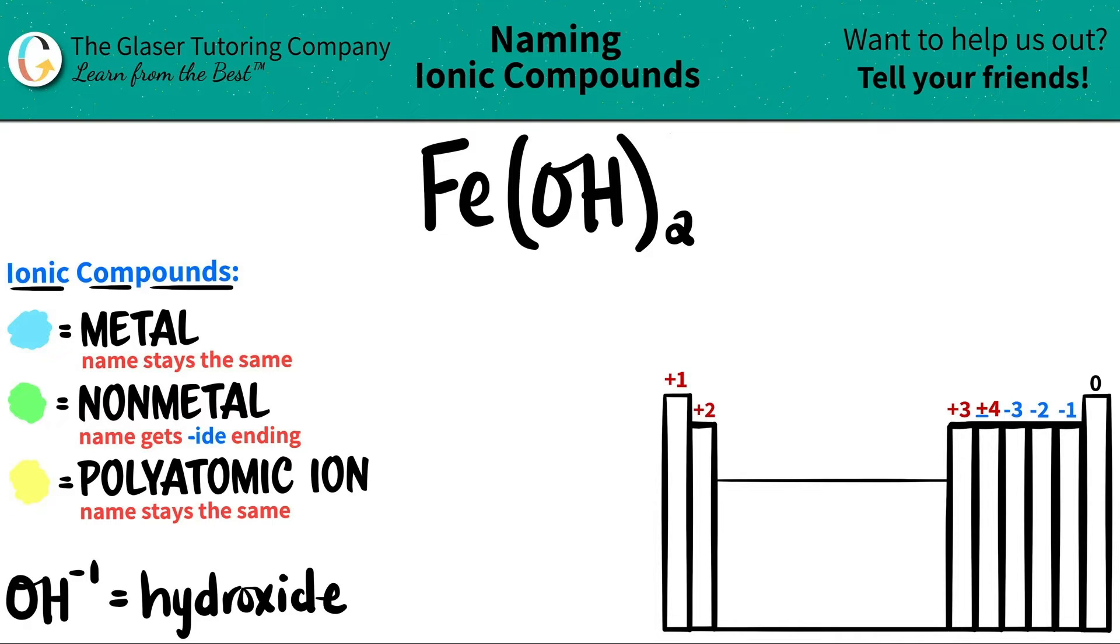So it's always easiest to identify the polyatomic and then work yourself through that. Always identify the polyatomics first. But polyatomics are never going to be on the periodic table. They have to be memorized.